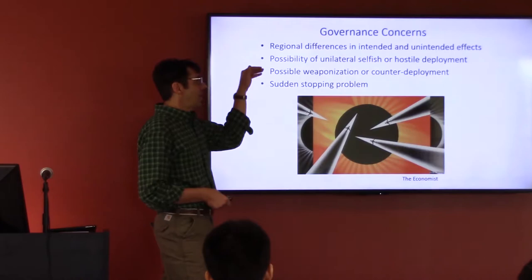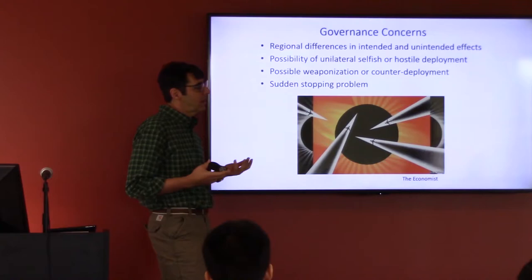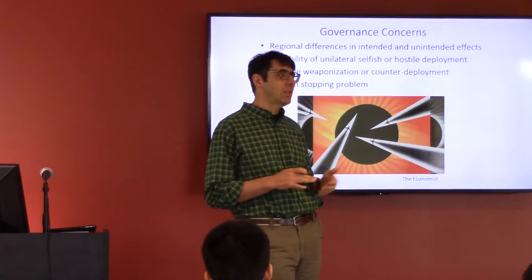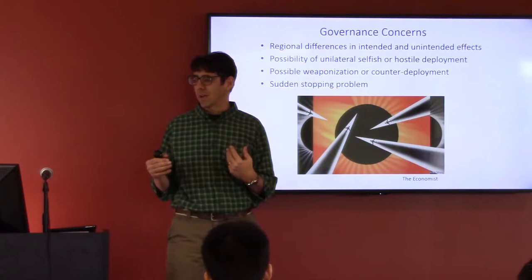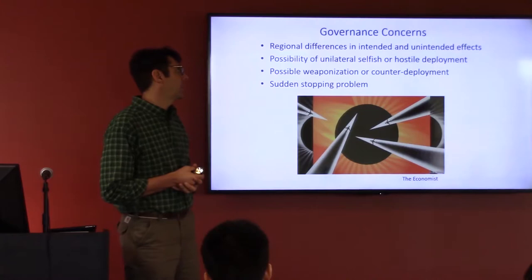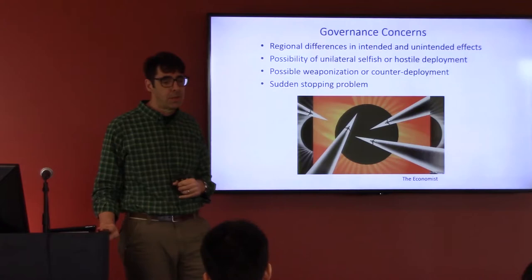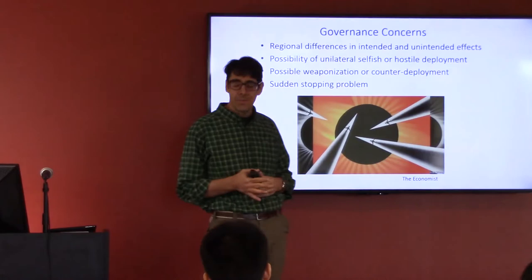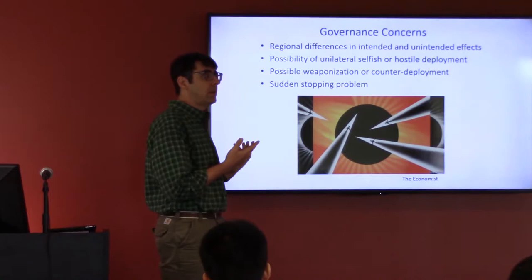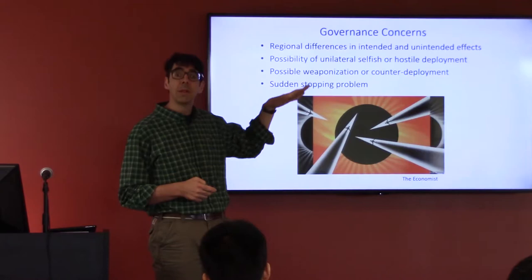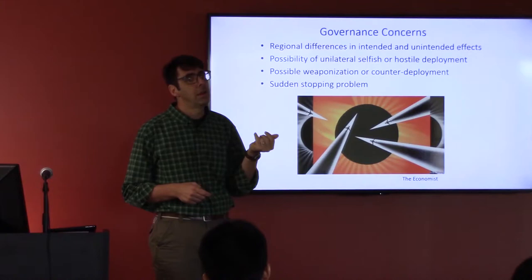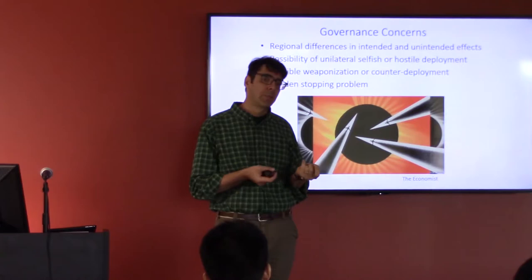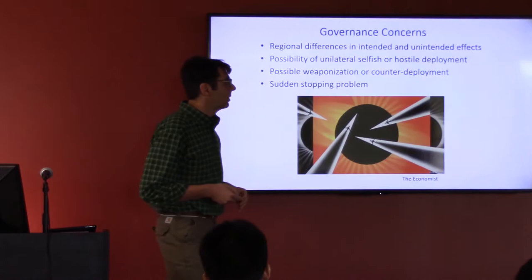Possible weaponization or counter-deployment has come out of Cold War thinking — if one country initiates it, the other would do something to offset it. It would probably be easier to take other actions to discourage deployment rather than counter-deploy offsetting geoengineering. Perhaps most importantly is the so-called sudden stopping problem: if for one reason or another — war, economic depression — actors decided to discontinue it, greenhouse gas concentrations would presumably be continuing to rise in the background. If you stopped deployment, temperatures would suddenly rise back up to that level in a matter of months, which would be catastrophic.